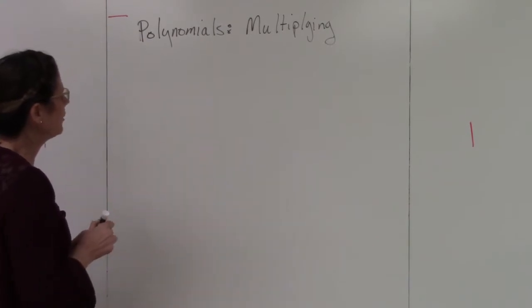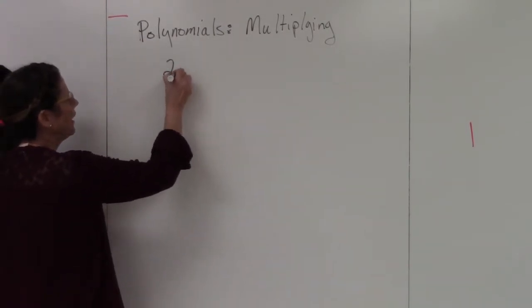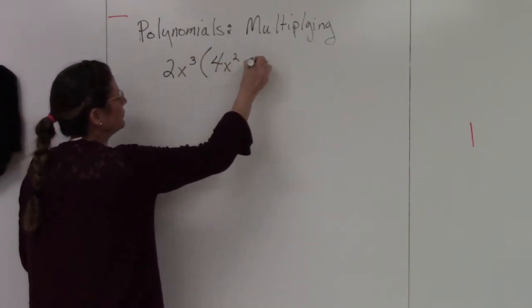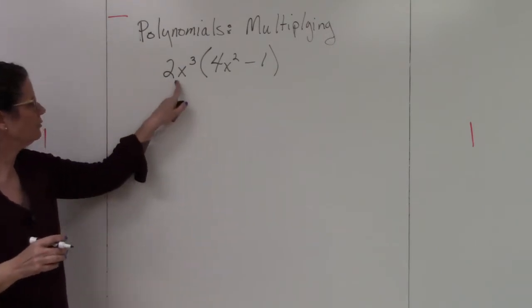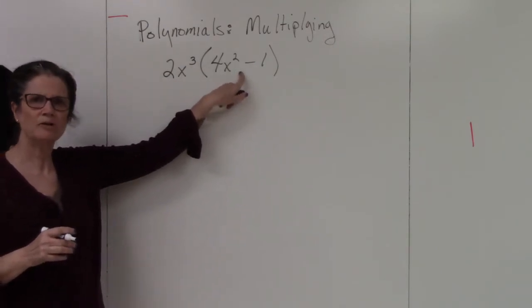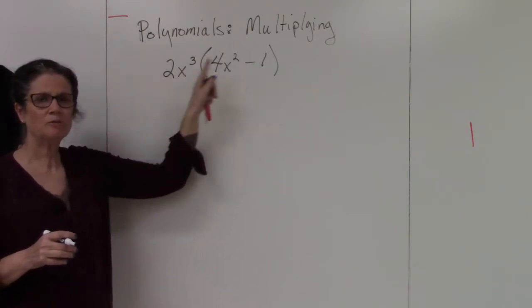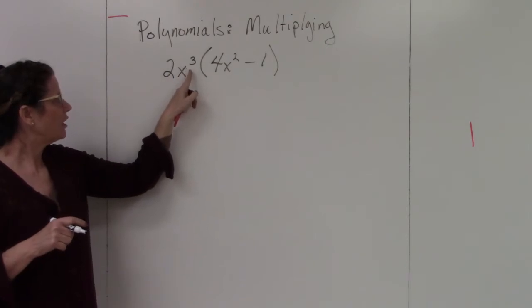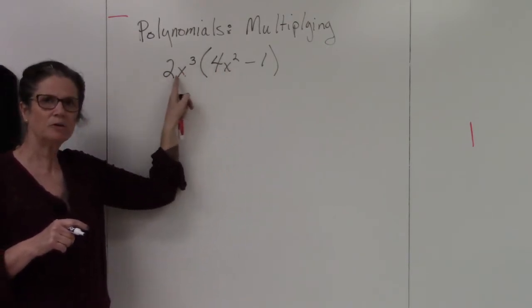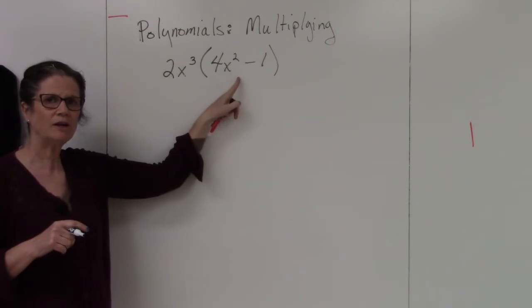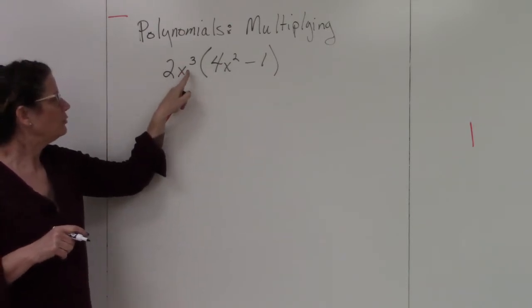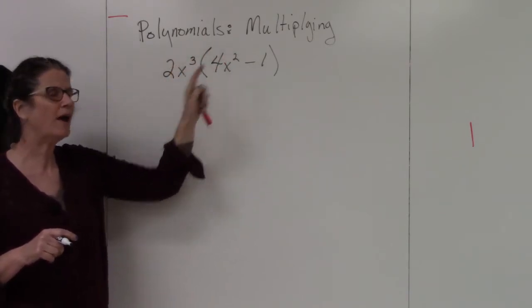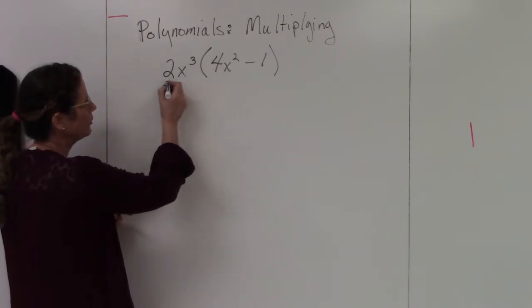When multiplying polynomials, I'm going to start with multiplying a monomial times a binomial — one term times a two-term polynomial. This is just the distributive property; that's all you're doing. What we're adding in is our exponent rules. If you aren't clear on exponent rules, make sure you watch that video on exponents. When you multiply with exponents, you add the exponents.